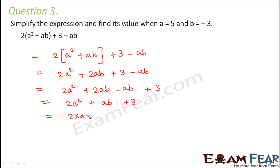So now this would mean 2 into a into a plus a into b plus 3. Now let us put the value of a. The value of a is given as 5. So 2 into 5 into 5 plus 5 into b is minus 3. So 5 into minus 3 plus 3.